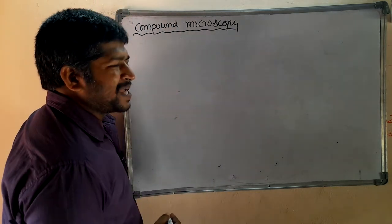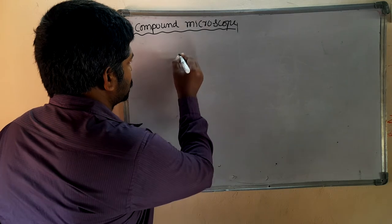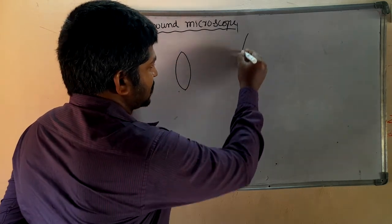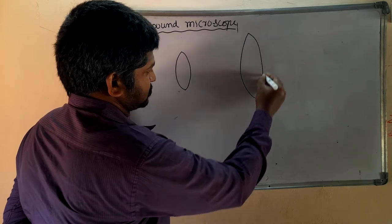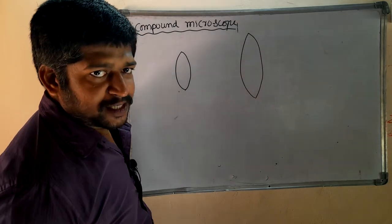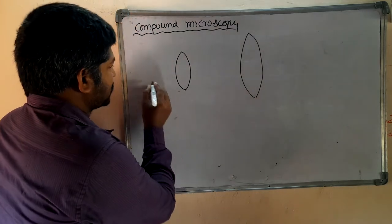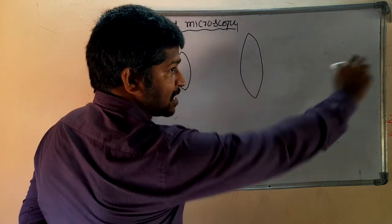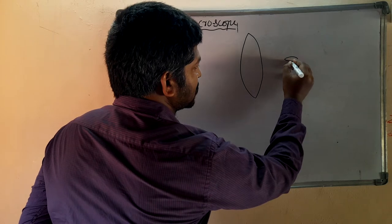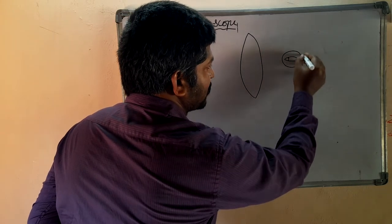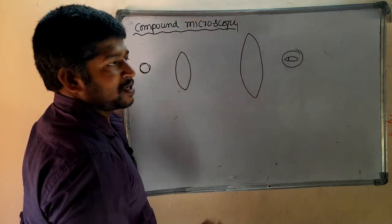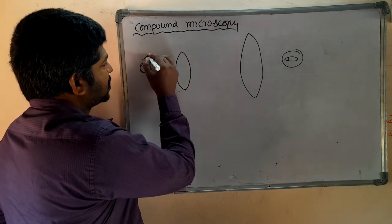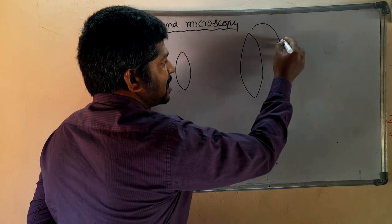In a compound microscope we have two biconvex lenses — one lens on the object side and one lens on the eye side. The object is here and our eye is here. So we are the observer. We have two lenses: one is at the object side and the other one is at the eye side.